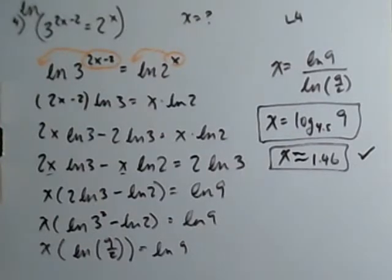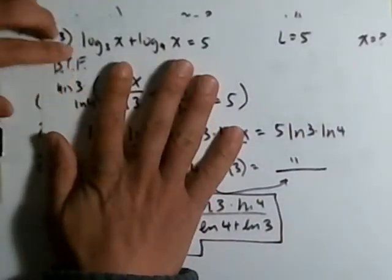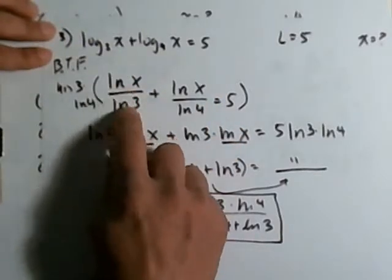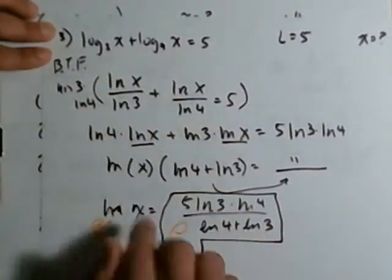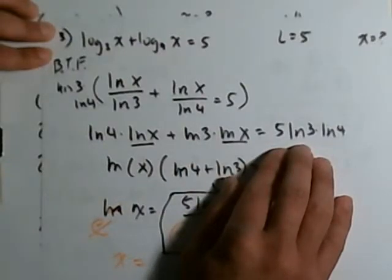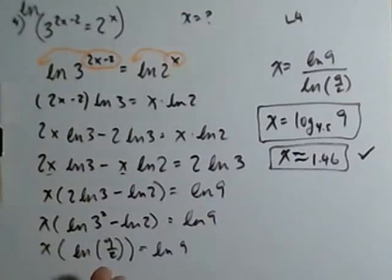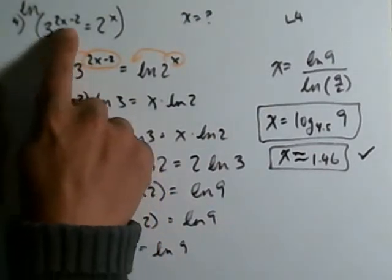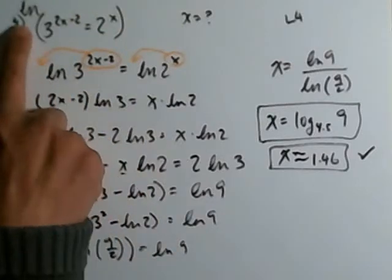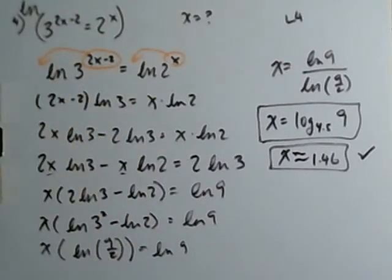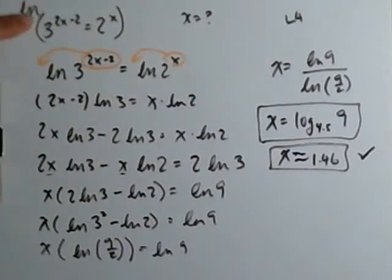So to recap: for problem three, change into different logs using the change of base formula on both terms, then bust that fraction to get a clean equation. For problem four, take the natural log of both sides to bring the exponents down, distribute, collect x terms, factor, and simplify. Whether you use common log or natural log, you'll get the same answer. Good luck on your test and happy hunting.